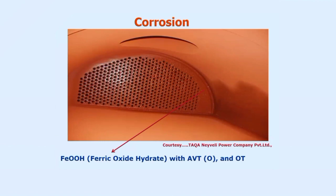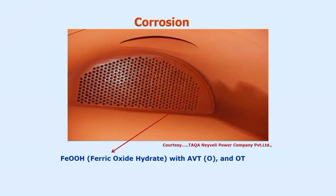This hematite protection is developed when we are using either ABTO or OT treatment. ABTO stands for all-volatile treatment oxidizing, and OT stands for oxygenation treatment. In most of the supercritical systems, they are either working with ABTO or gradually going to OT treatment.